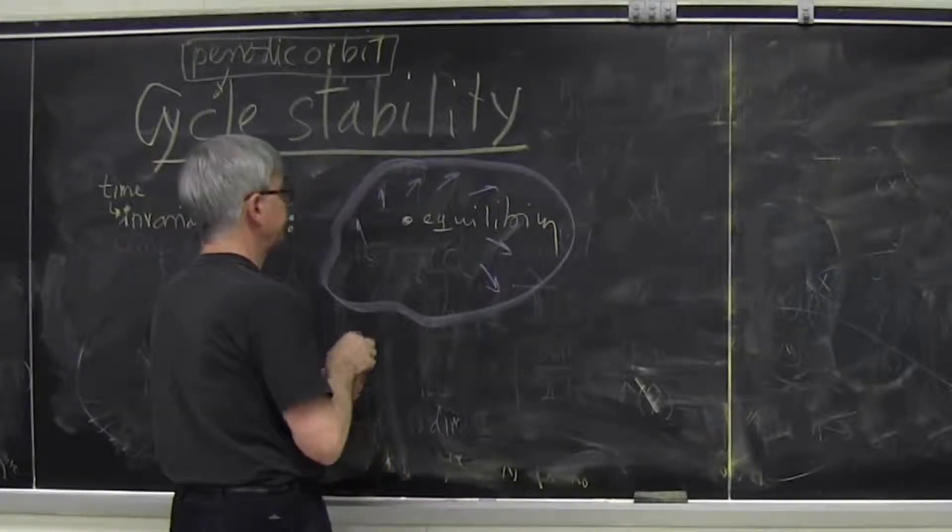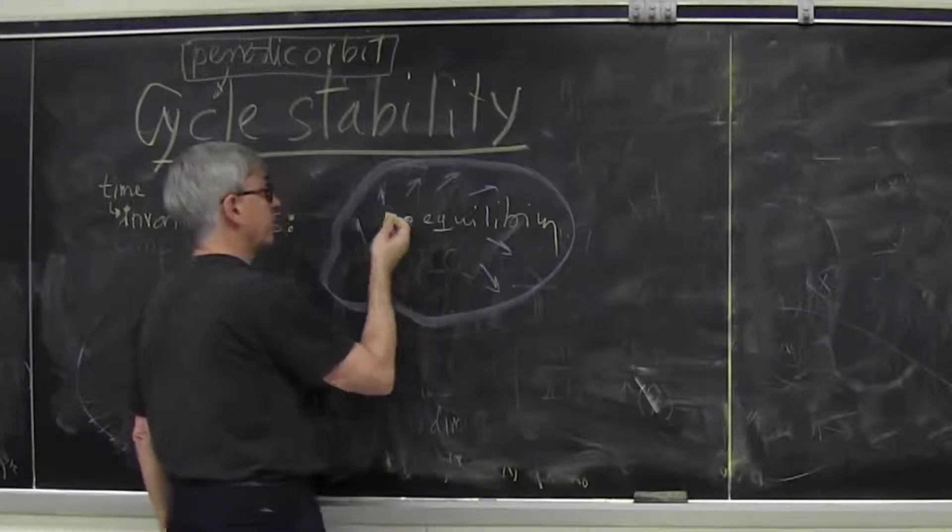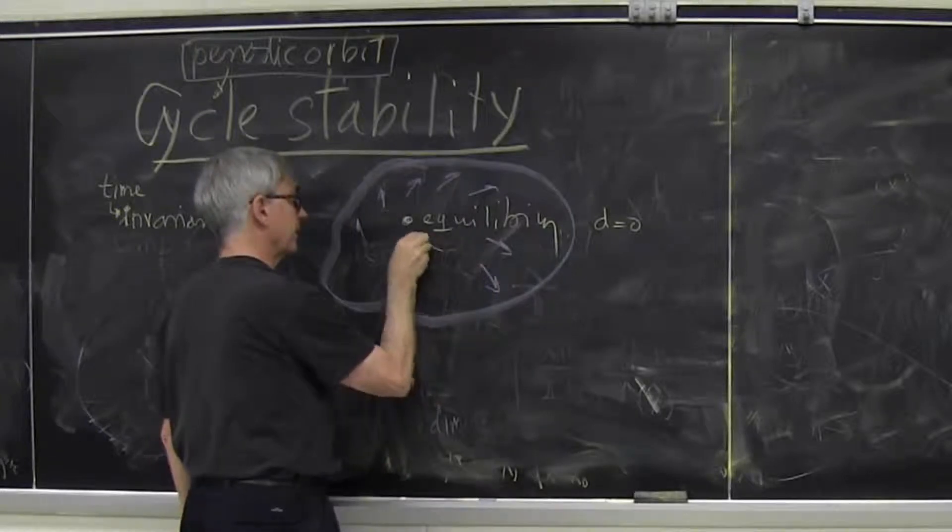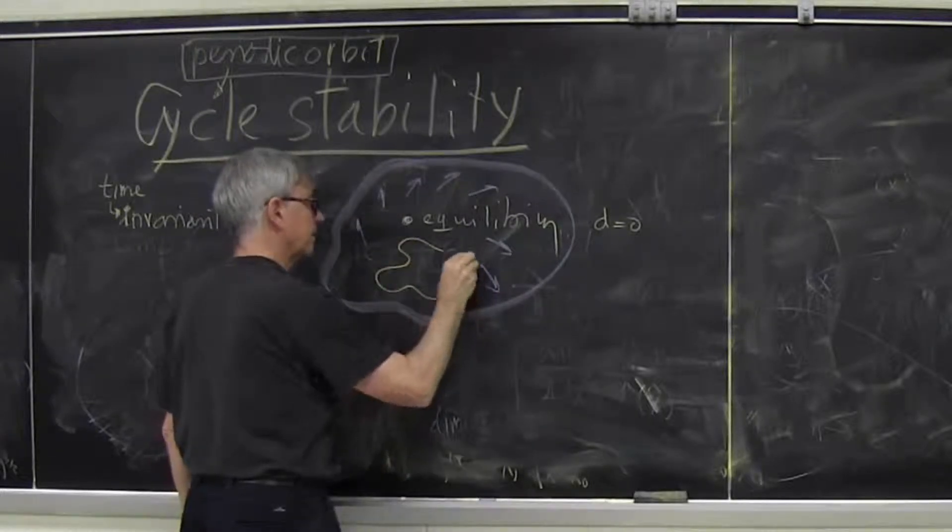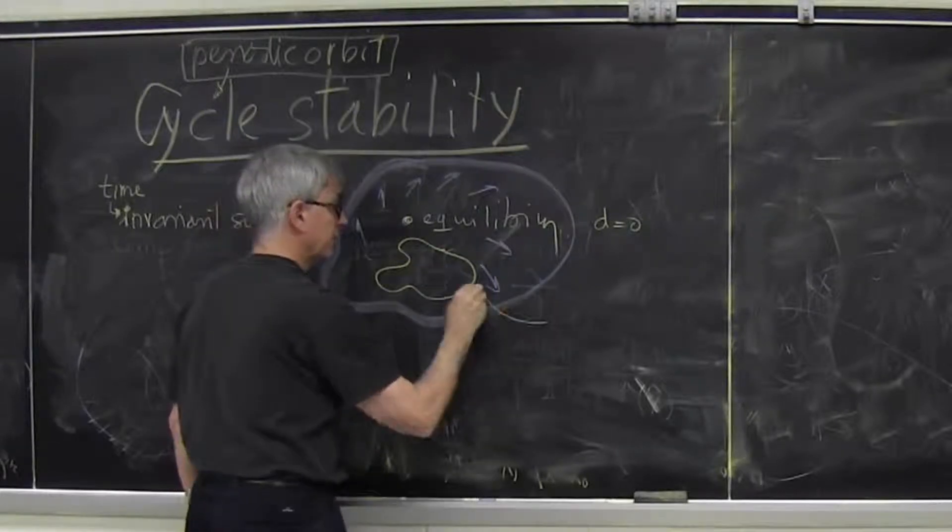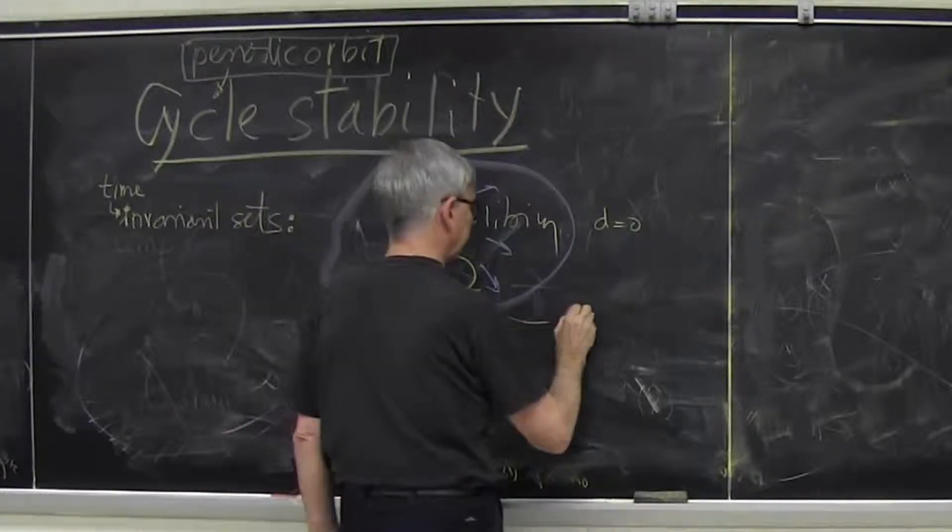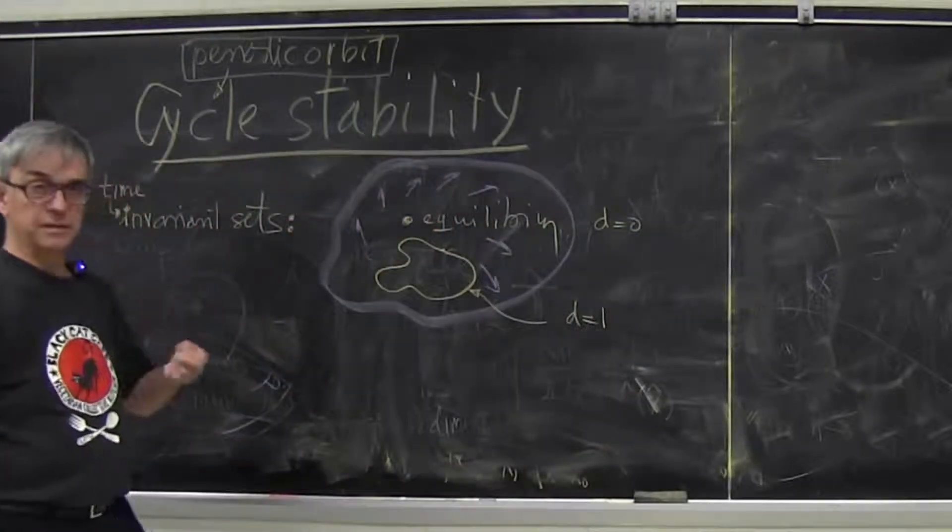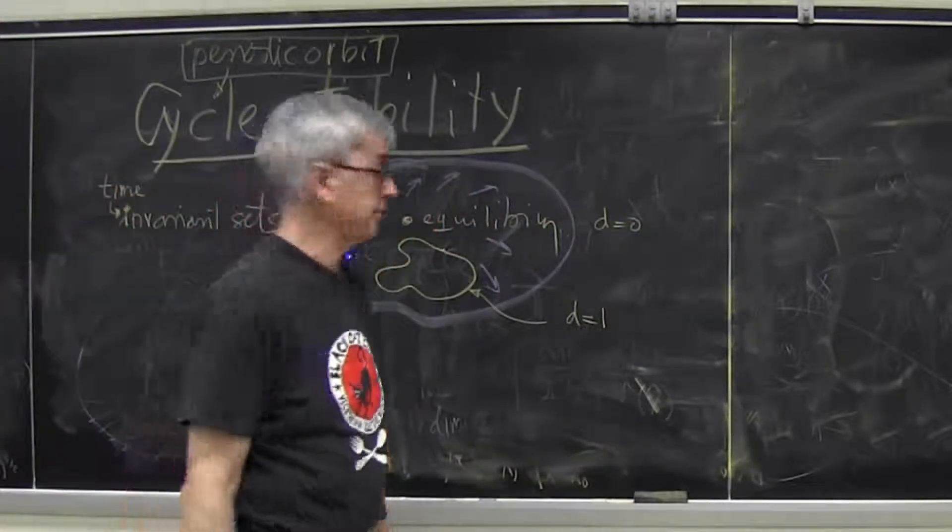Then the next object, so this is dimension zero, next object, which is very natural because that's how science got started, was periodic orbits. So it's a curve of one dimension embedded in a million, doesn't matter what your state space is.